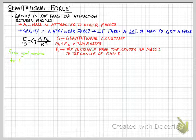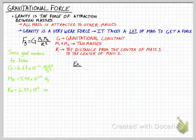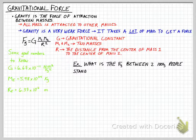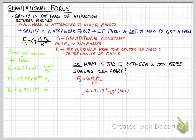There are some important numbers to know. The gravitational constant G is 6.67 × 10⁻¹¹ N·m²/kg². The mass of the Earth is 5.98 × 10²⁴ kg, and the radius of the Earth is 6.37 × 10⁶ m. Using the gravitational force equation and these constants, here's an example: what is the force of gravity between two 100 kg people standing 0.5 meters apart? We plug into F_G = G·M₁·M₂ / R².